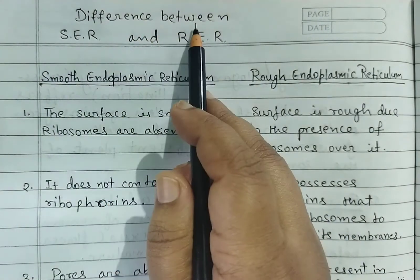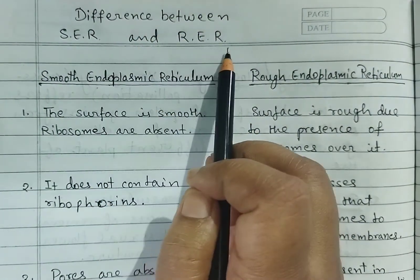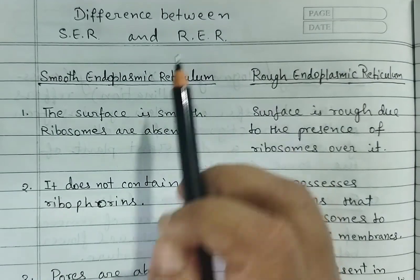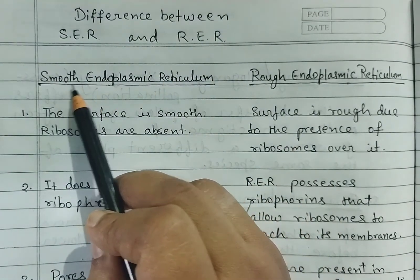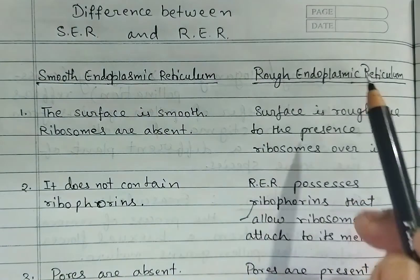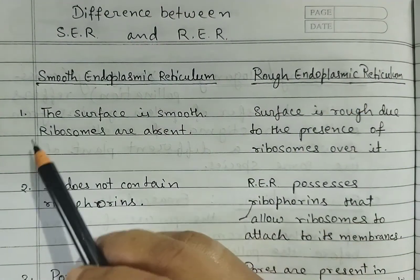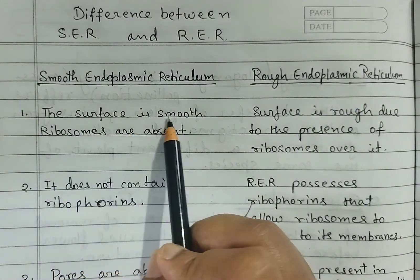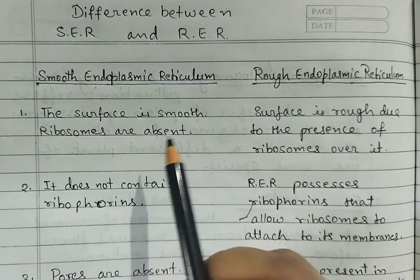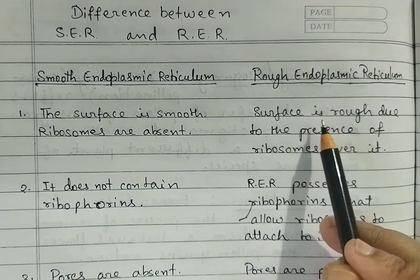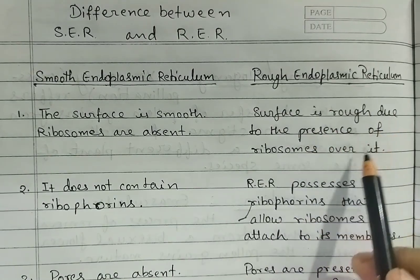Difference between smooth endoplasmic reticulum and rough endoplasmic reticulum. Left side: smooth endoplasmic reticulum; right side: rough endoplasmic reticulum. First difference — in smooth, the surface is smooth and ribosomes are absent. In rough, the surface is rough due to the presence of ribosomes over it.